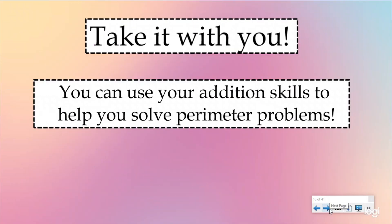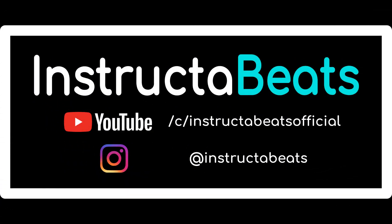What we want you to take with you today is that you can use your addition skills to help you solve perimeter problems. You can use your fact family skills to rewrite the addition equation as subtraction to solve for the missing side. You can use your part-whole model to figure out these missing pieces. Thank you so much for checking us out today — please like and subscribe. Check out our area and perimeter song. Instructor Beats out.